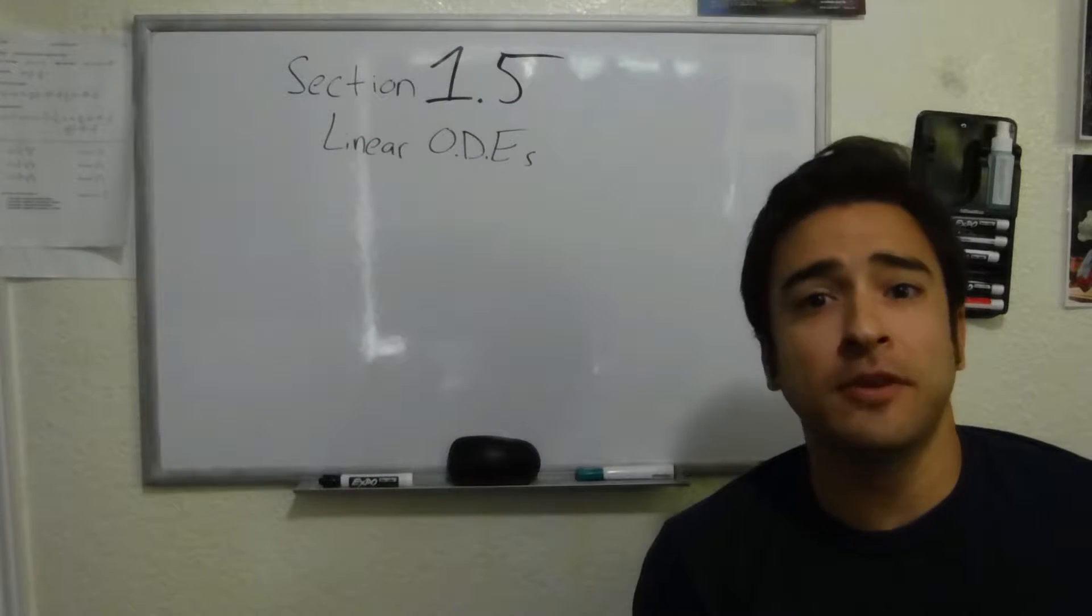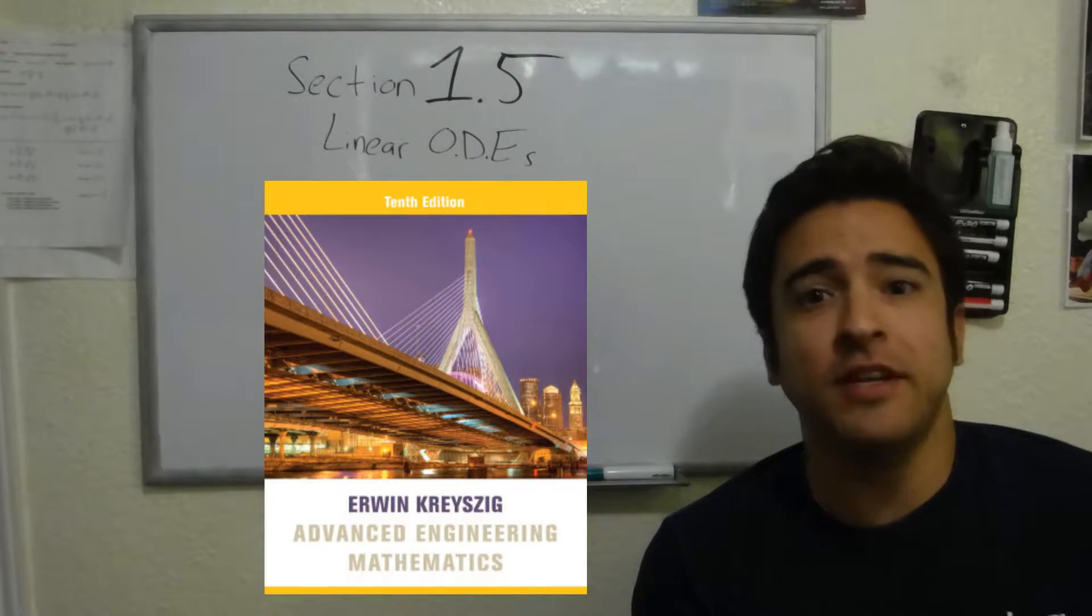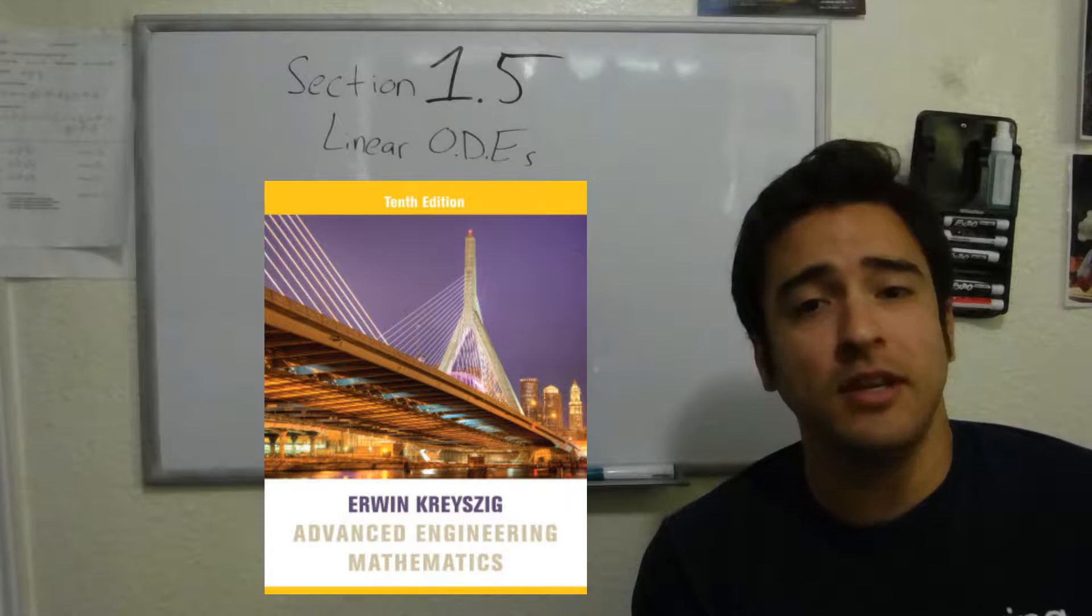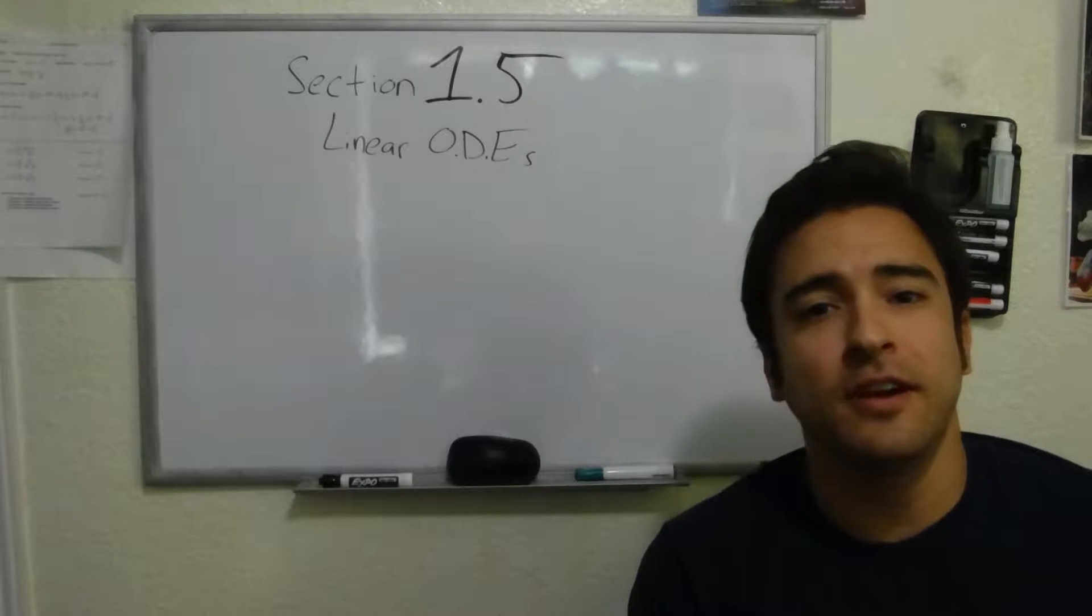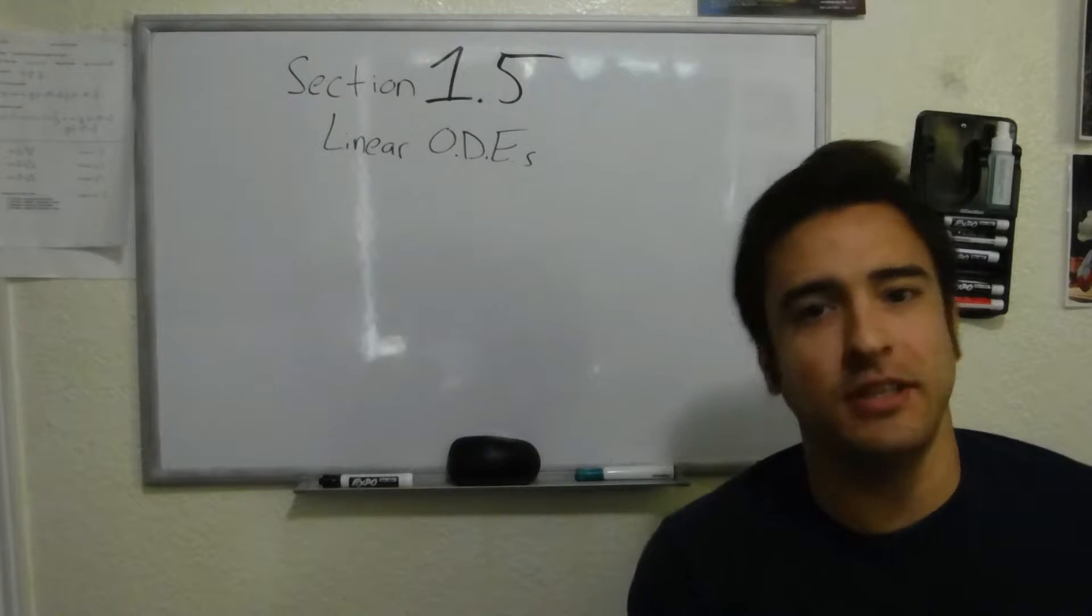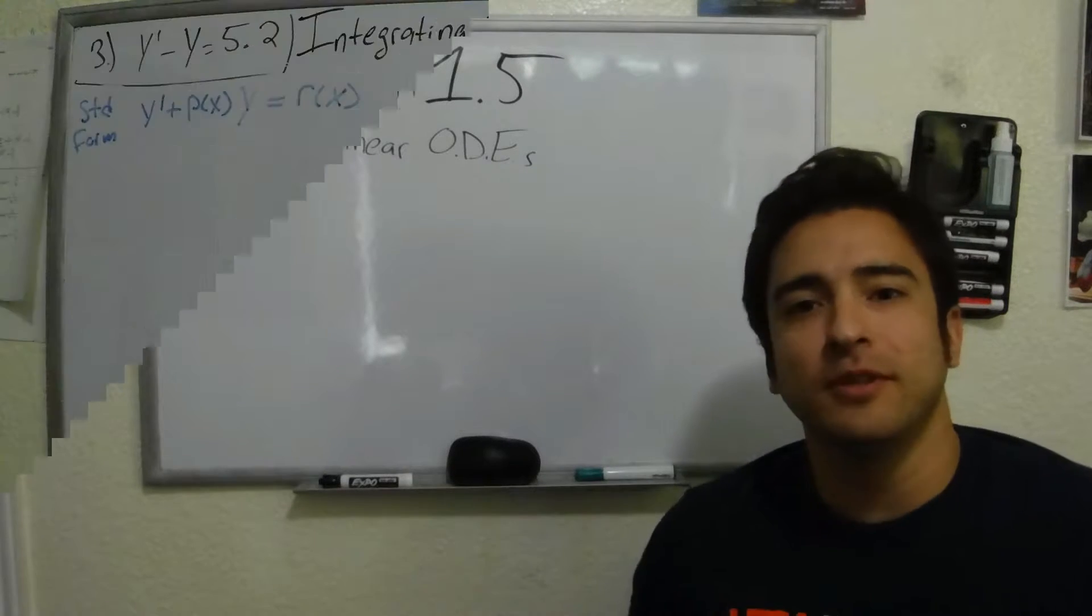Hello all, my name is James. Today we're going to be going over section 1.5 of the Advanced Engineering Mathematics textbook, 10th edition. This is going to involve ODEs, linear, non-homogeneous and homogeneous ODEs. I hate long intros, so let's get right to it.